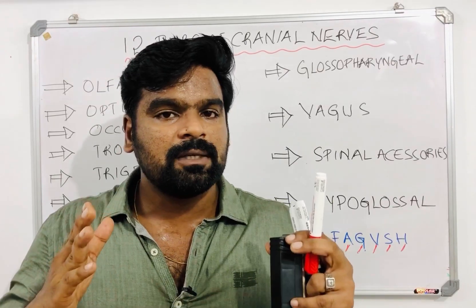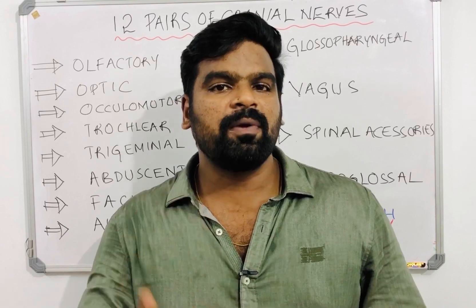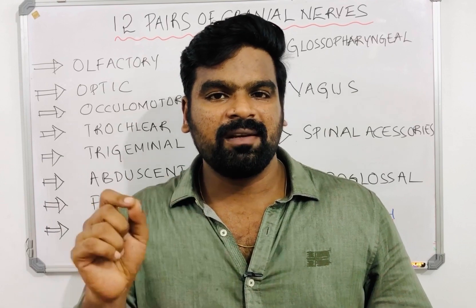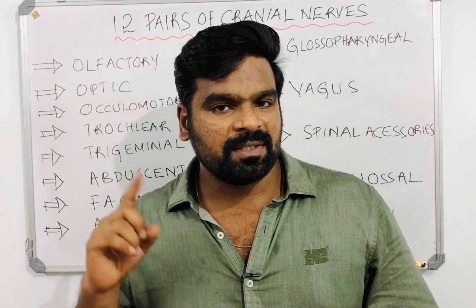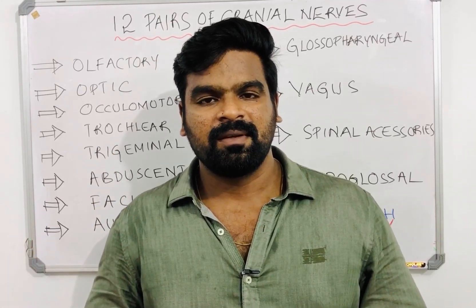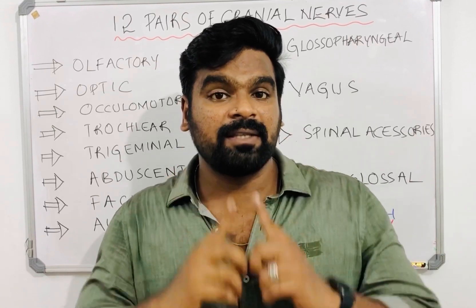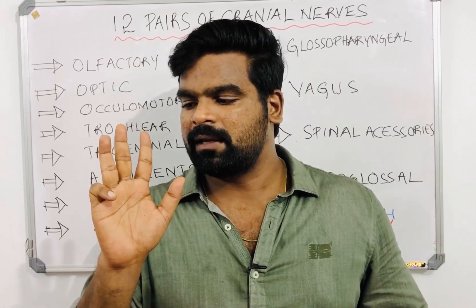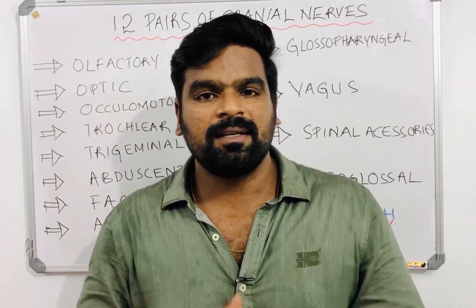So those are the 12 pairs of cranial nerves and their functions. Here is a question: A patient is having difficulty in chewing. Which cranial nerve is affected — 1st, 3rd, 5th, or 7th nerve? Difficulty in chewing means the trigeminal nerve. Counting: olfactory, optic, oculomotor, trochlear, trigeminal — it is the 5th cranial nerve. So the answer is the 5th cranial nerve.